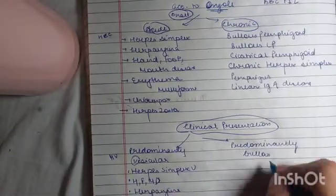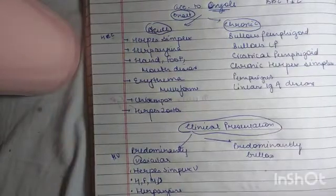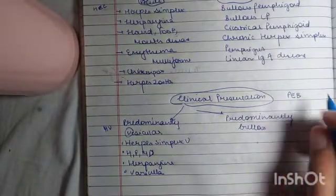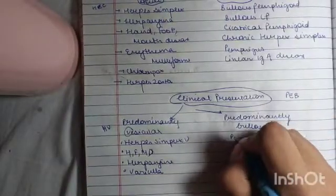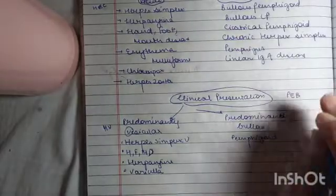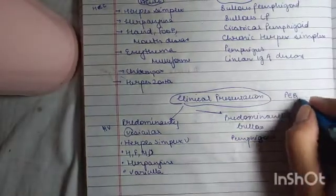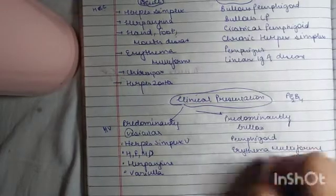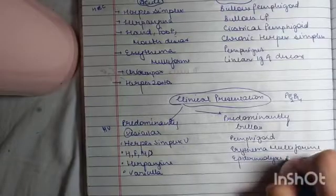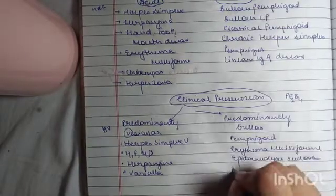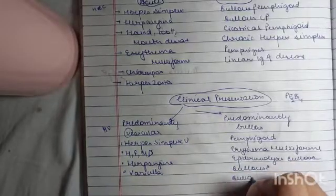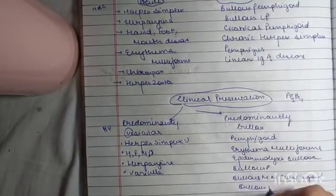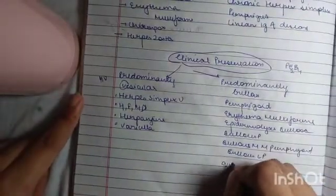Now on the predominantly bullous, you can remember this by remembering pub but with an E, so basically peb. Or you can remember it as pebble but we just need these three alphabets. So by P we have pemphigoid. Now remember B will come many times, around four times and E will come two times. So by E we have erythema multiform, epidermolysis bullosa. Now turn for B. Bullous pemphigoid, bullous mucous membranous pemphigoid, then bullous lichen planus, and bullous impetigo.